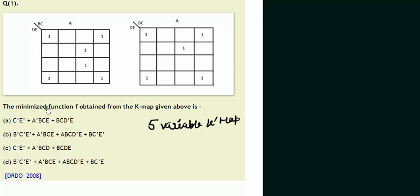It is given in the question that the map is already filled with 1s. This is for A' and this is for A. The minimized function f obtained from the K-map given above is - so we have to just minimize this 5-variable K-map and match your answer with the option.